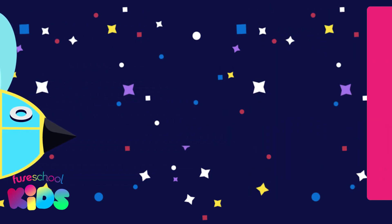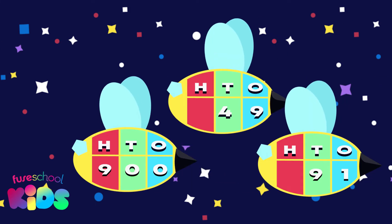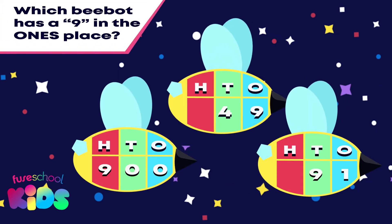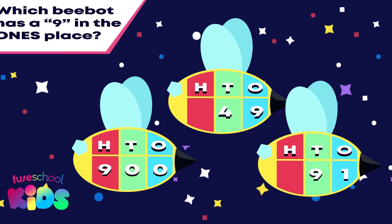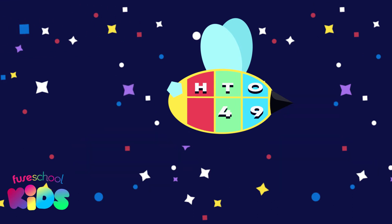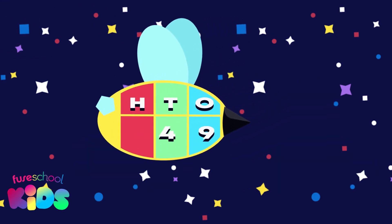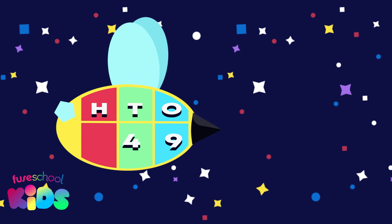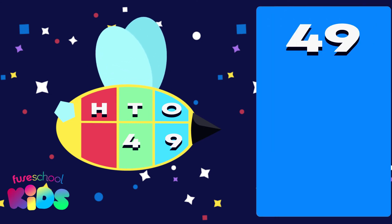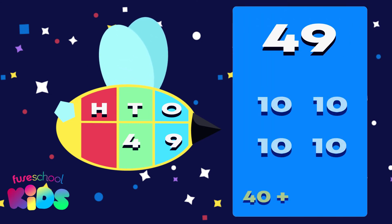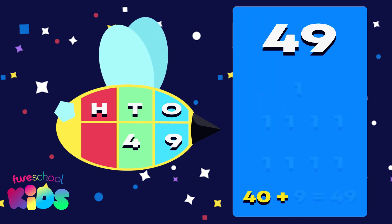Now let's try another number. Which of these beehive bots has a 9 in the ones place? Did you say this one? Well done! The number is 49, which is 4 tens and 9 ones.